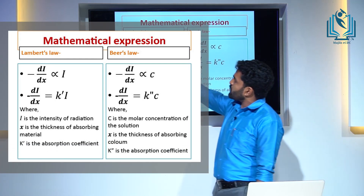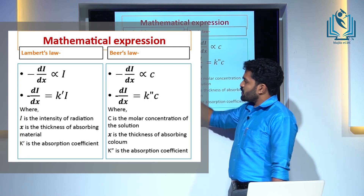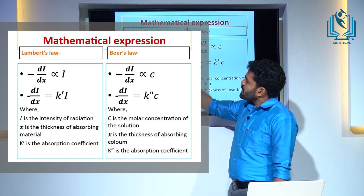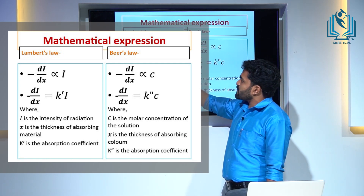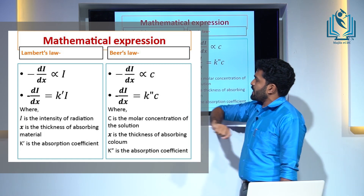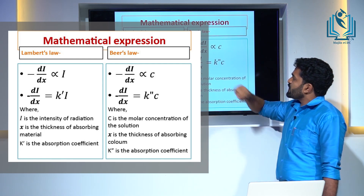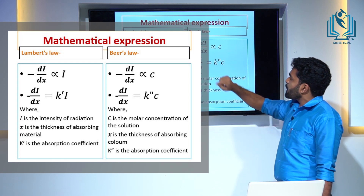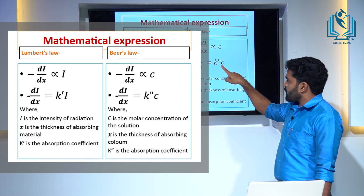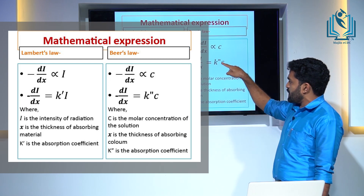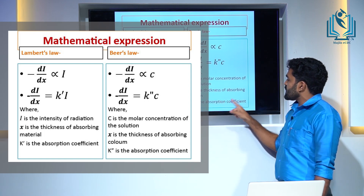The mathematical expression of Lambert's Law is: minus dI/dx is proportional to I, where I is the intensity of radiation and x is the thickness of the absorbing material. Multiplying by the proportionality constant k', we get: minus dI/dx equals k' times I, where k' is the absorption coefficient. The mathematical expression for Beer's Law is: minus dI/dx is proportional to c. Multiplying by the constant k': minus dI/dx equals k' times c, where c is the molar concentration of the solution and x is the thickness of the absorbing layer. k' is known as the absorption coefficient.